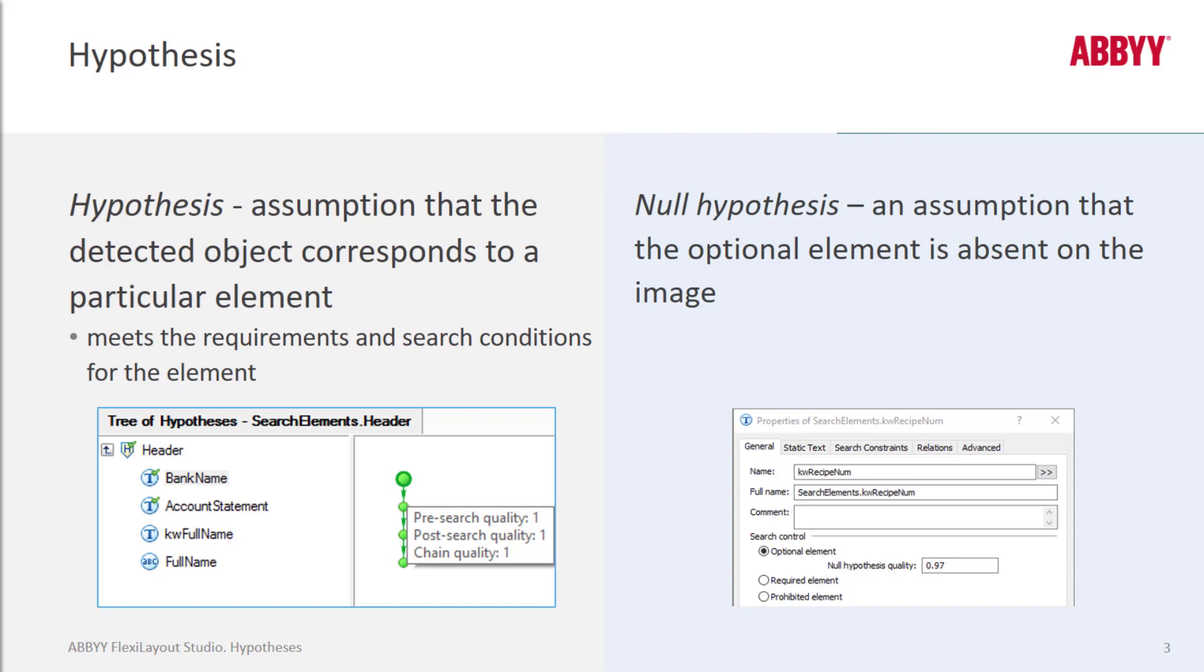The hypothesis is essentially different variants of the same elements to be found on the document. For instance, if you create a character string element and you've not specified any search area, more than one string could be found for this element. So FlexiLayout Studio finds different variants of the same element and creates different hypotheses.